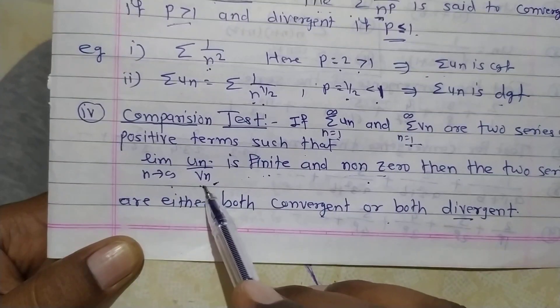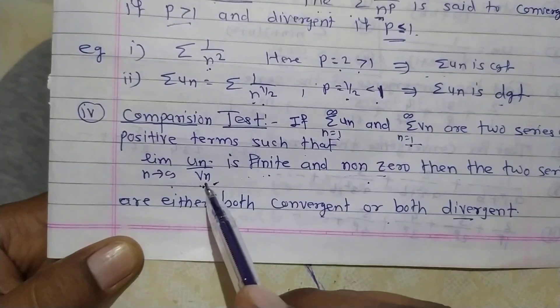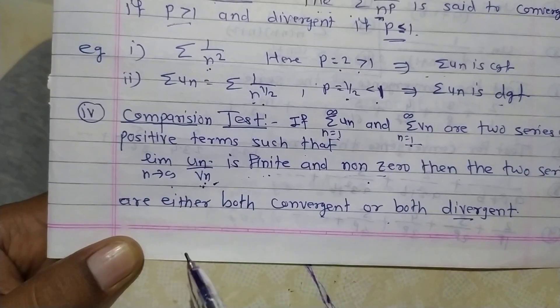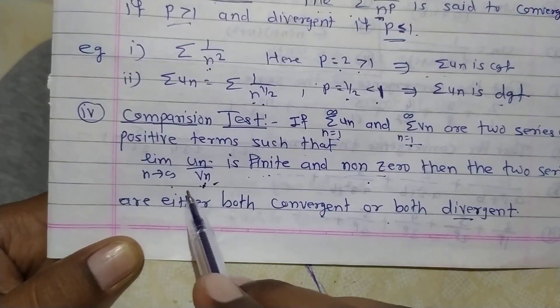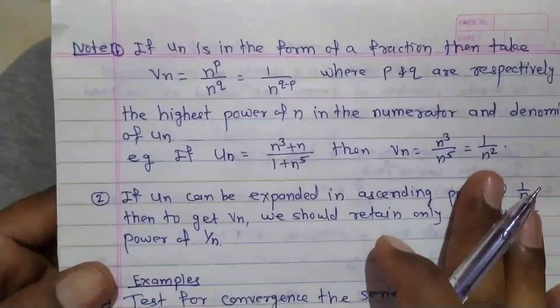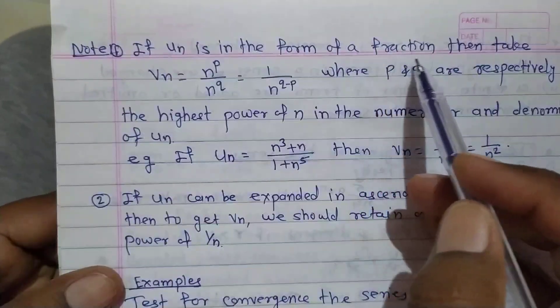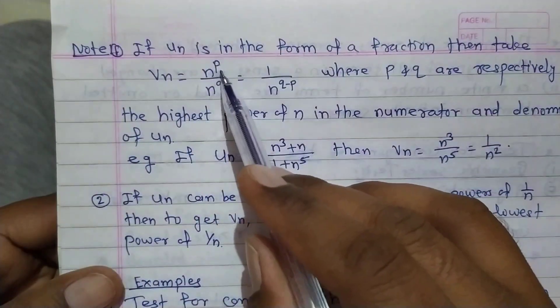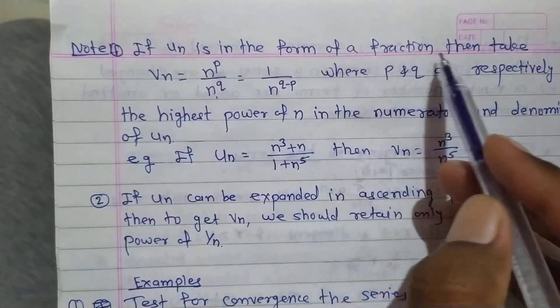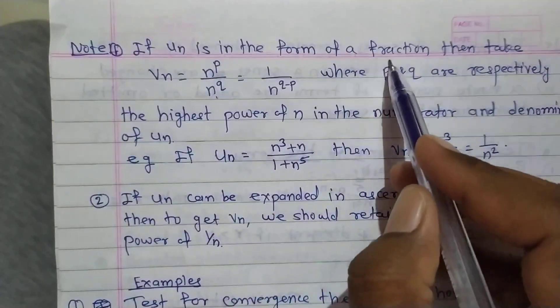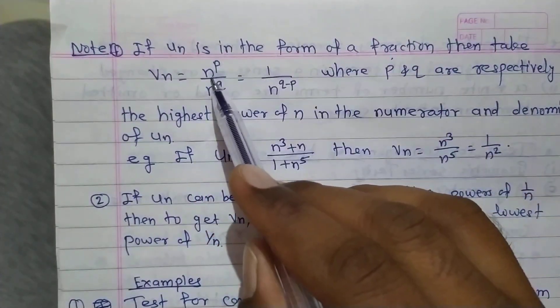If that limit is finite and non-zero, we say series un and vn are convergent or divergent together. We decide whether they converge or diverge using the p-series test on vn. If vn is convergent, then un is also convergent; if vn is divergent, then un is also divergent. Finding vn is very important here.